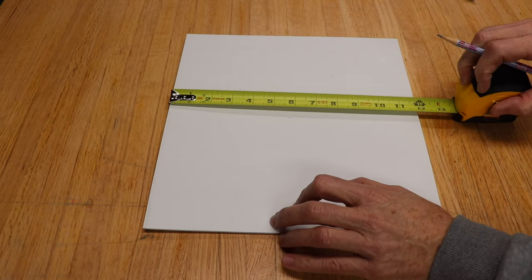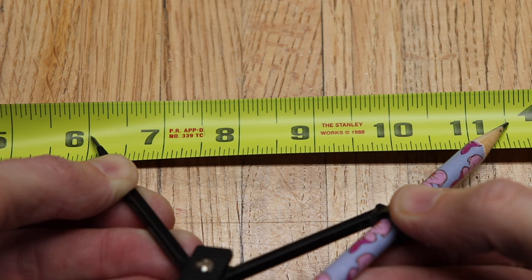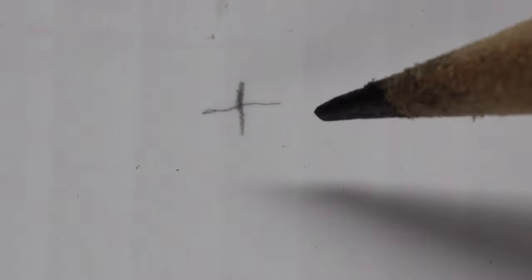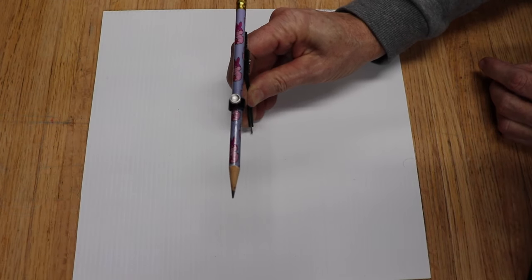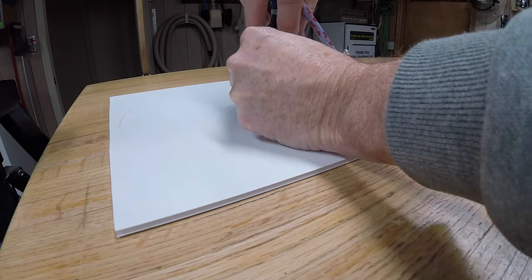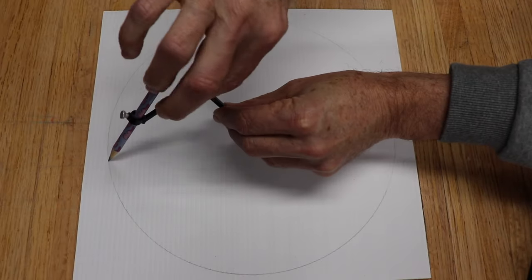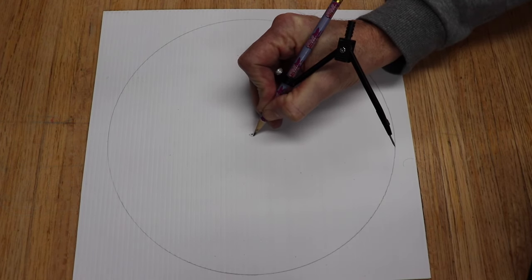So first of all mark the center. Now take your compass and open it up to five and a half inches which will create an 11 inch circle. And before you draw your circle make sure that the mark is right in the middle of one of the flutes of the cardboard. And now be sure to mark the center.